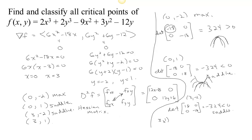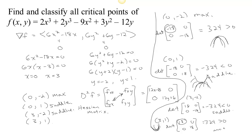Case 4: at (3, 1), the Hessian matrix has 36 minus 18 equals 18 in the (1,1) position, 0, 0, and plugging in 1 gives 18 in the (2,2) position. The determinant equals 324, which is greater than 0. f sub xx is positive 18, so it's concave up in the x direction, and since the determinant is positive it's concave up in all directions — therefore we have a min at (3, 1).